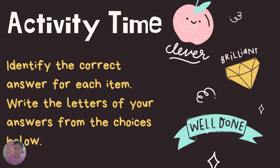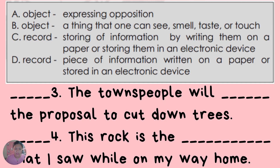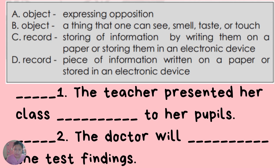Let's try this activity. Identify the correct answer for each item. Write the letters of your answers from the choices below. A: object — expressing opposition. B: object — a thing that one can see, smell, taste, or touch. C: record — storing of information by writing on paper or storing in an electronic device. D: record — a piece of information written on paper or stored in an electronic device. Number 1: The teacher presented her class blank to her pupils. Number 2: The doctor will blank the test findings. Number 3: The townspeople will blank the proposal to cut down trees. Number 4: This rack is the blank that I saw while on my way home. What do you think are the correct answers? Let us check.